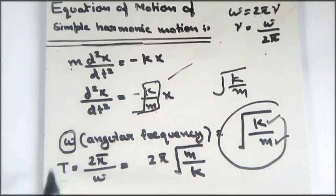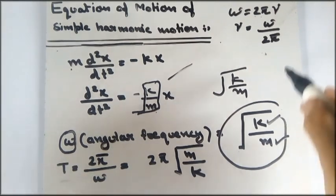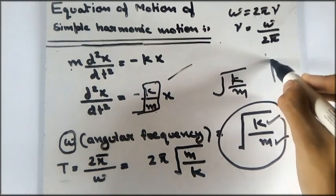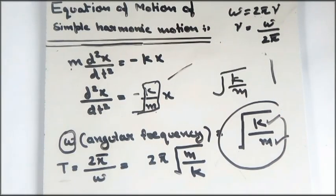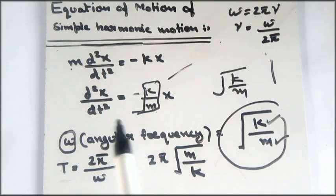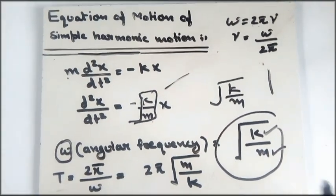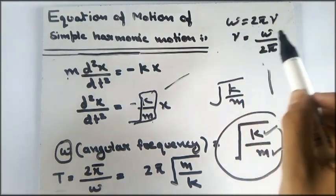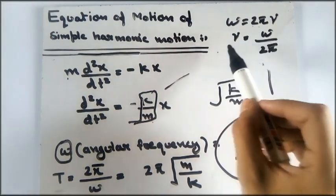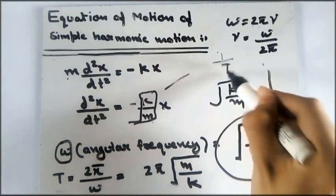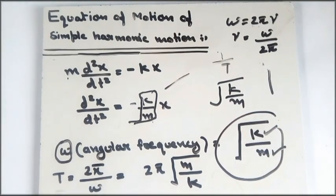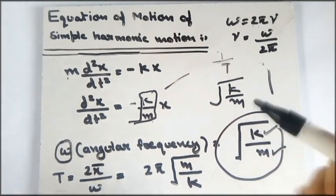The time period T gives us the time it takes for the object to complete one full oscillation under simple harmonic motion. The ordinary frequency is ν = 1/T, related to angular frequency by ω = 2πν, which tells us how many times the system oscillates per second.